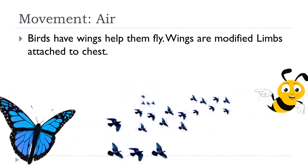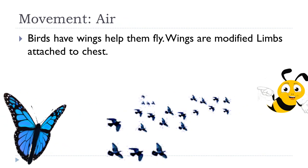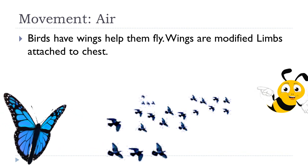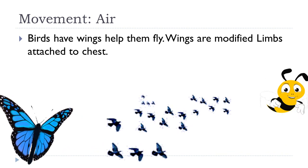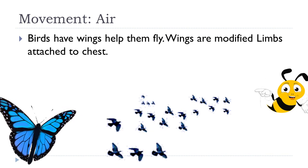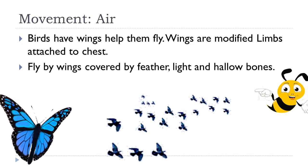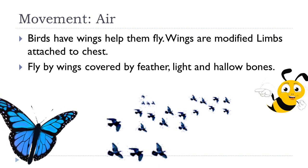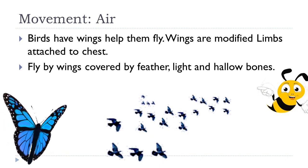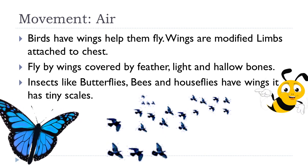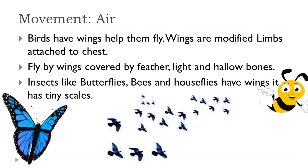Birds have wings which help them fly. Their wings are the modified forelimbs, attached to their chest muscles. Bats move by flapping their wings, which are covered with a skin membrane. They have light hollow bones which make it easier for them to fly. Birds use their two legs to walk, run, and perch on trees.